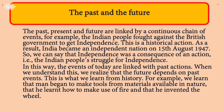The past and the future: The past, present, and future are linked by a continuous chain of events. For example, the Indian people fought against the British government to get independence — this is a historical action. As a result, India became an independent nation on 15th August 1947. So we can say that independence was a consequence of the Indian people's struggle for independence. In this way, the events of today are linked with past actions. When we understand this, we realize that the future depends on past events. This is what we learn from history.